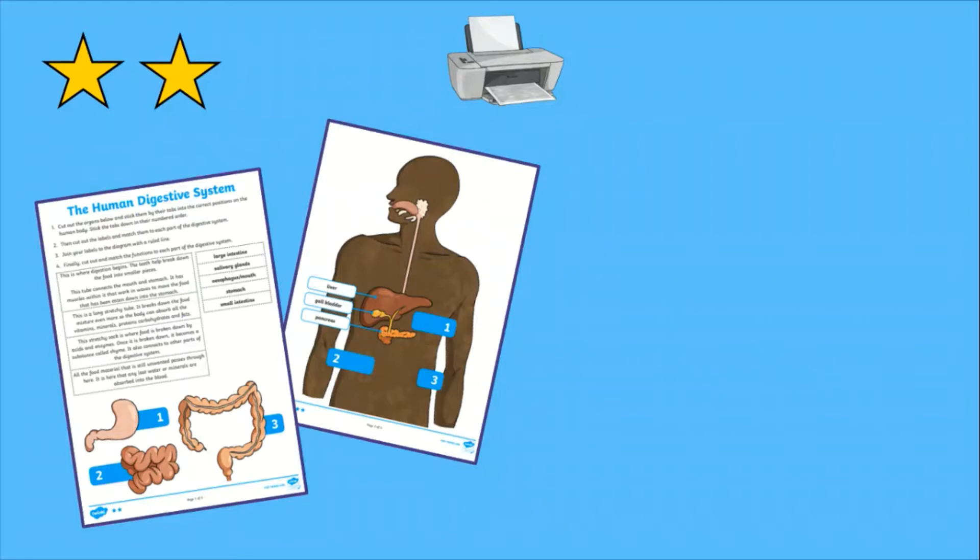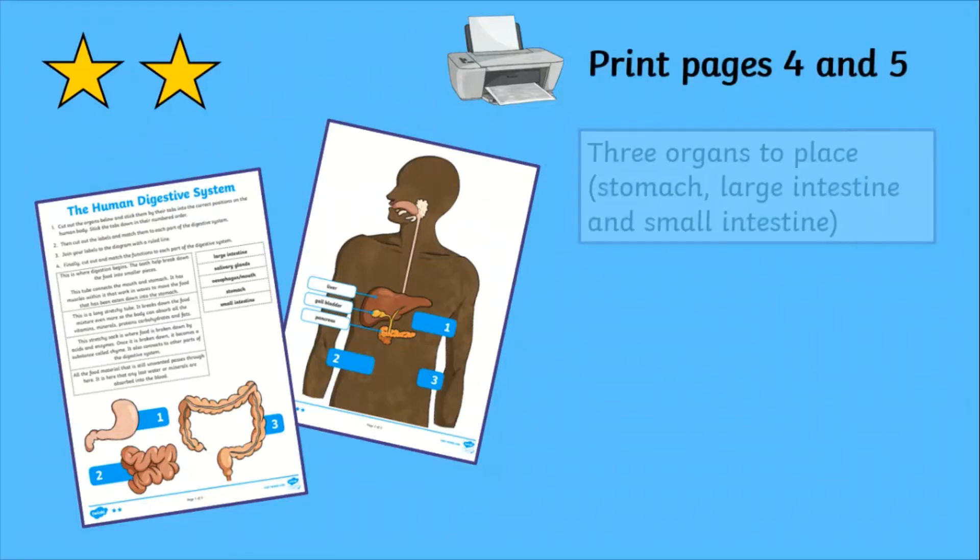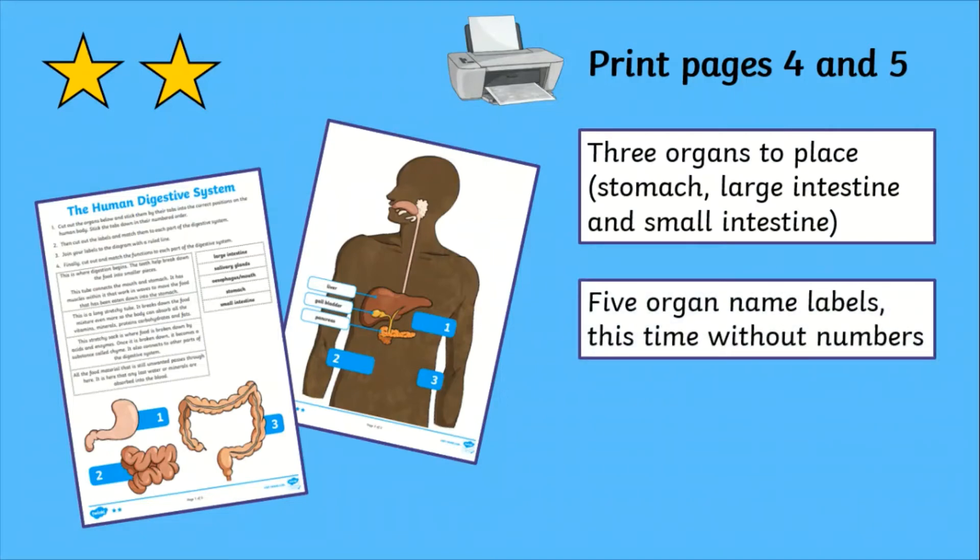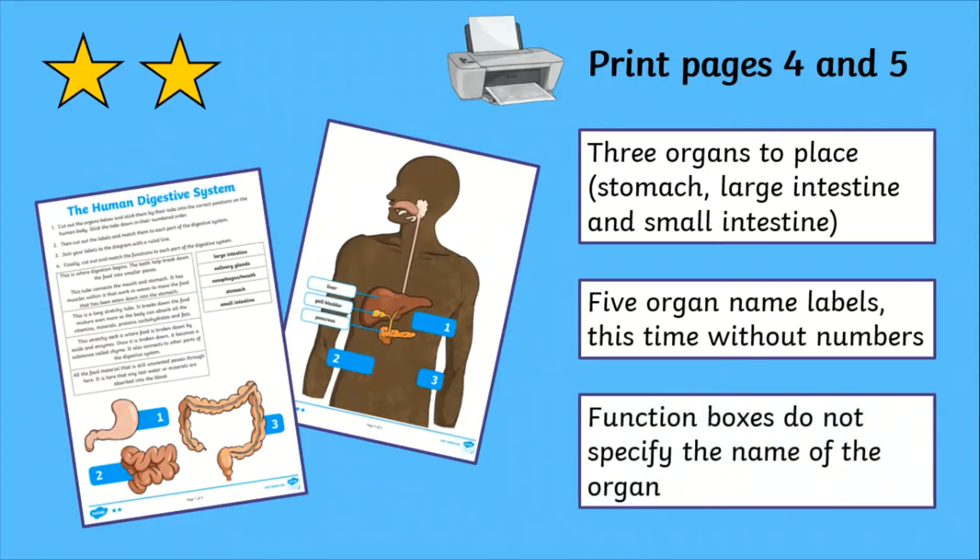For the middle difficulty, children will need a copy of pages four and five each. There are still three organs to cut and place, but there are now five name labels and they are not numbered. The function boxes are also more challenging as they do not name the organ being described.